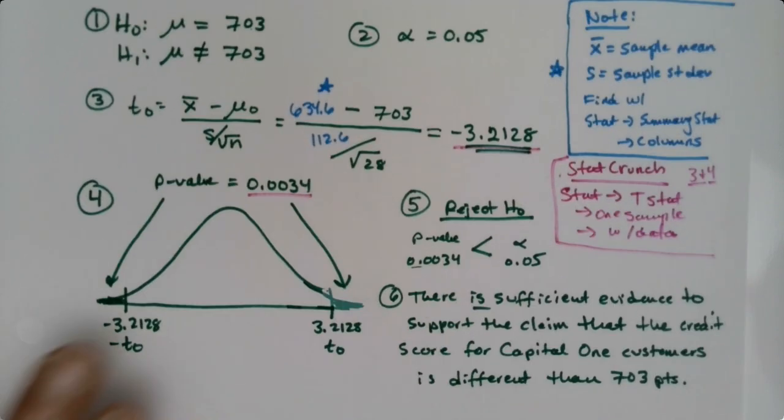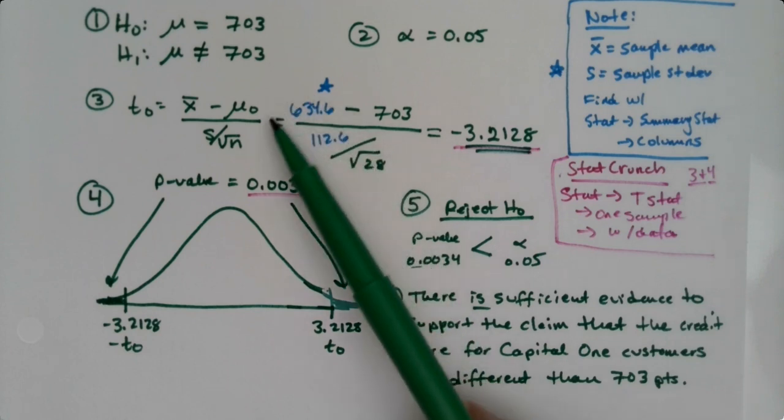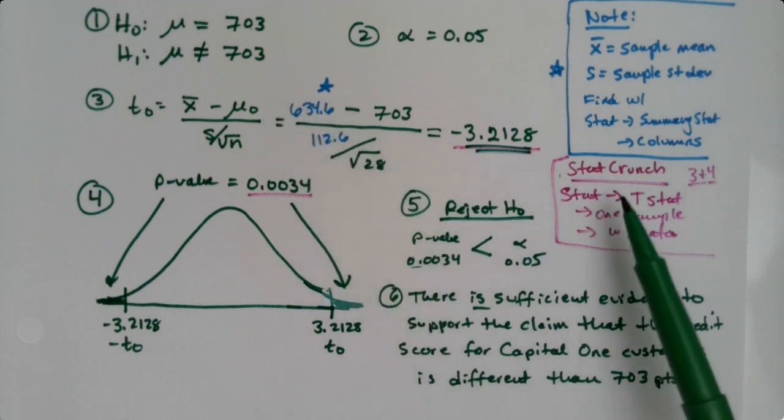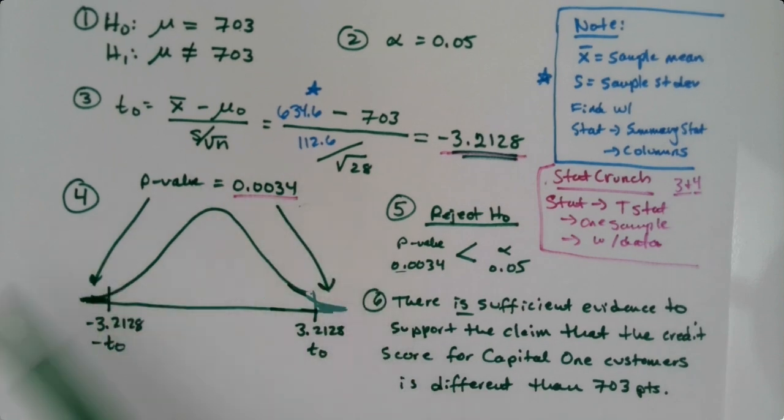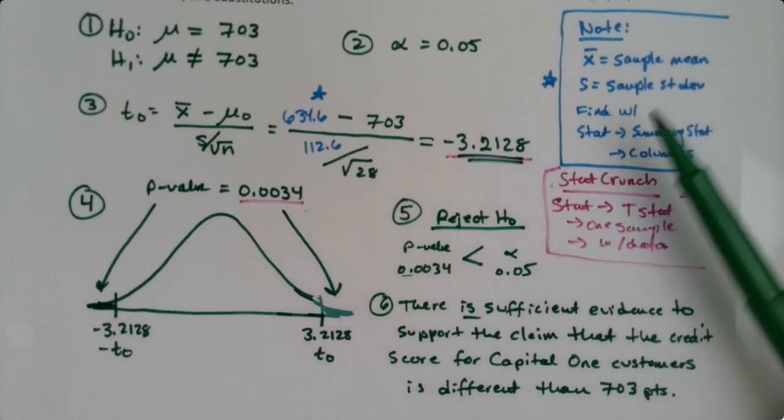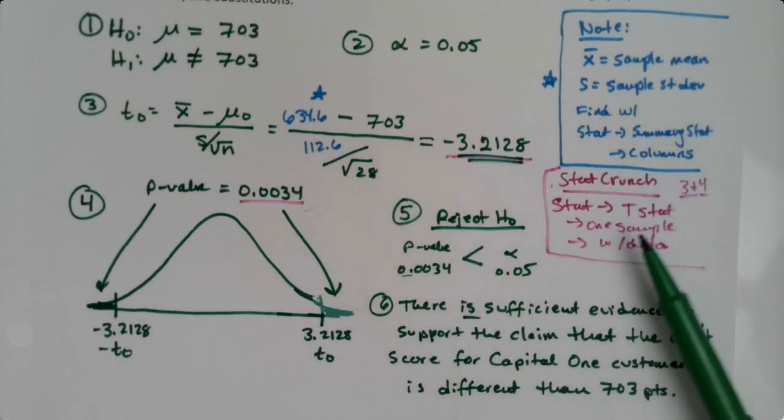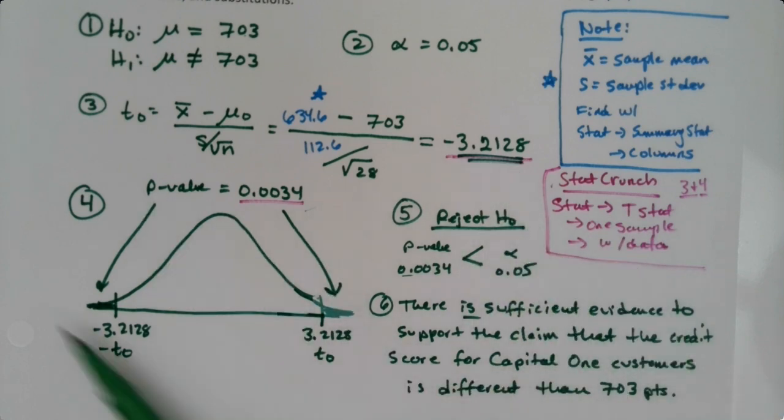So we had to use stat crunch two different ways. We had to use stat crunch once to find the x-bar and the s and then again to find this value here and this whole p-value action and that picture and everything. So it's important to write down both ways. There's stat crunch path for finding the x-bar and the s and another stat crunch path for finding the end result for step three and the whole of step four and the p-value.